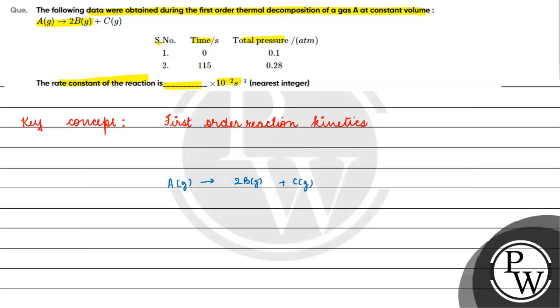What is the initial pressure? 0.1 atm. This initial pressure is only for A because at that time, B and C are not yet formed.